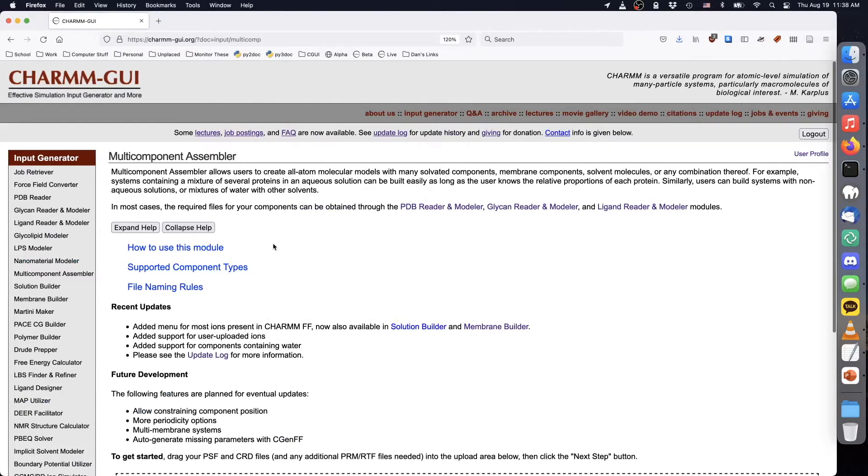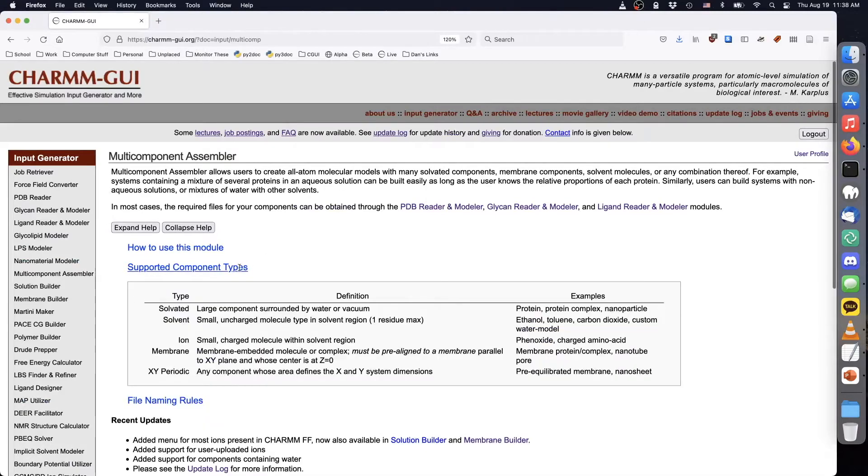Multi-component assembler provides all-atom modeling for complex molecular systems composed of all molecules supported in CHARMM-GUI, such as biomacromolecules, polymers, nanoparticles, and small molecules.